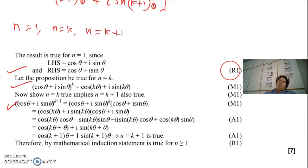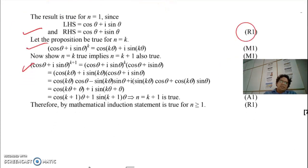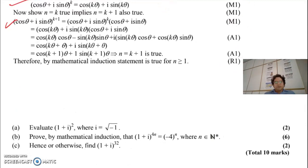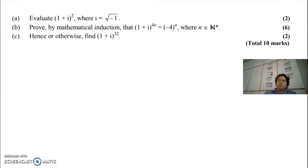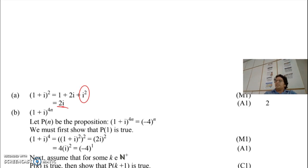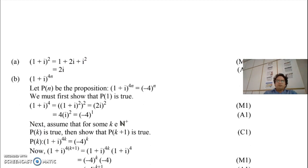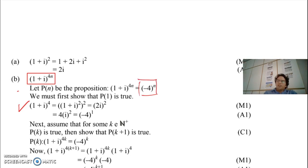If you've understood this, try to attempt the next question. Pause the video before seeing the answer. For question 2, the first step is to evaluate (1+i)². You open up the bracket and since i² = −1, positive 1 and negative 1 cancel out — this part is pretty easy. Taking n=1, the left-hand side is to the power 4 and the right-hand side gives (−4)^1.